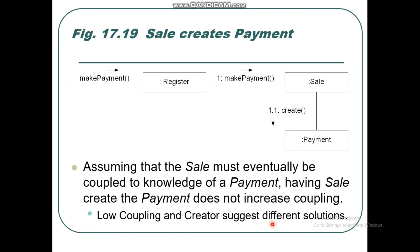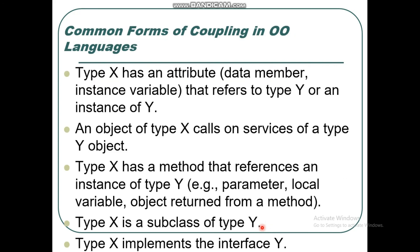We need to test common forms of coupling in object-oriented languages. These include: Type X has an attribute that refers to Type Y or an instance of Y; Type X has a method that references an instance of Type Y; Type X has a method that refers to Type Y; and Type X is a subclass of Type Y or implements interface Y.